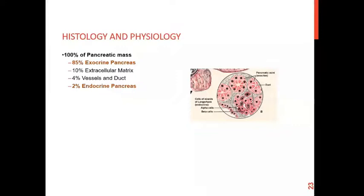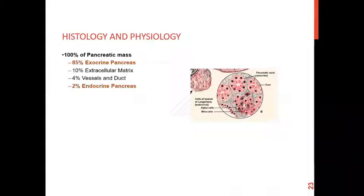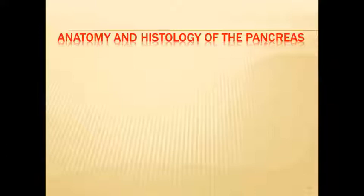Once chyme moves into the duodenum, we need to understand the histology and physiology of the pancreas because it releases enzymes and bicarbonates into the duodenum. Of the total pancreatic mass, 85% is exocrine function, 10% is extracellular matrix, 4% is blood vessels and duct system, and only 2% is endocrine. The exocrine pancreas is the larger part, with many cells producing enzymes.